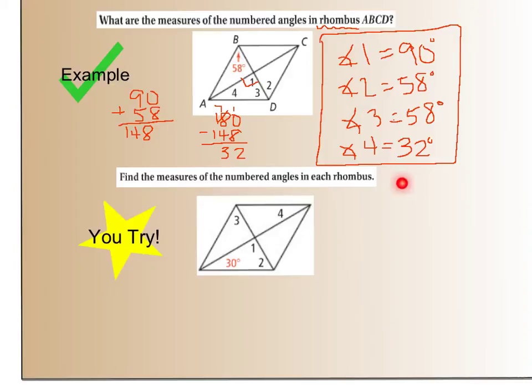So there are all of your angle measures. We've determined what they are using the two theorems that we just learned. So now I have a problem for you to try right down here. I'd like you to go through. Remember you're looking for angle one, angle two, angle three, and angle four.